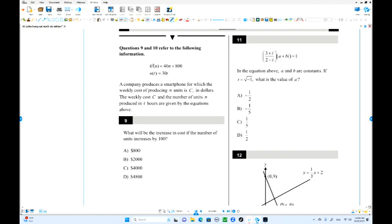Number 9. A company produces smartphones for which the weekly cost of producing n units is given. This is the number of units, this is total cost. The number of units is a function of time. What will be the increase in cost if the number of units increase by 100? Delta change in c over change in n equals the slope, which is constant. This increased by 100. What is the increase in c? 40 times 100, right? $4,000 increase.